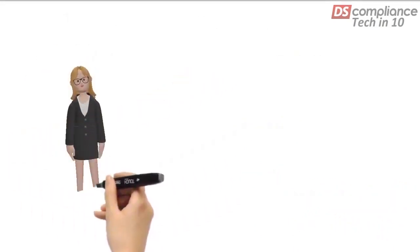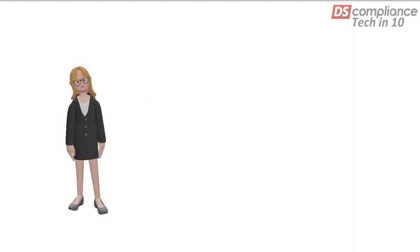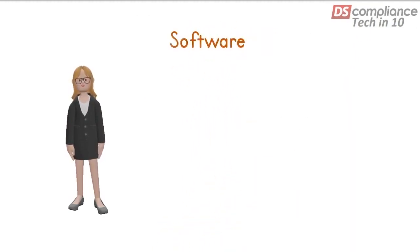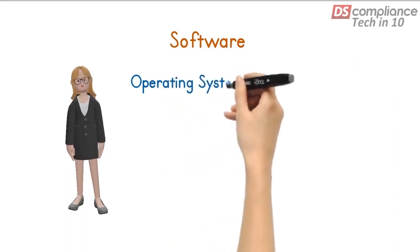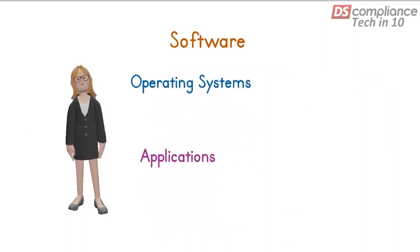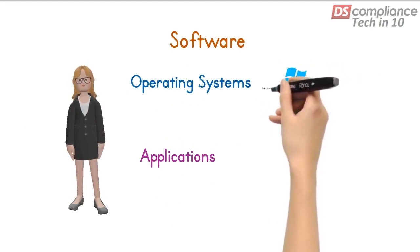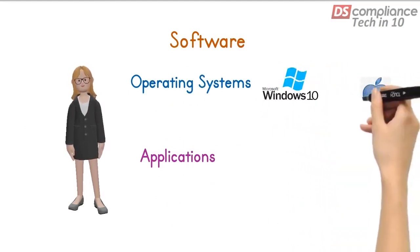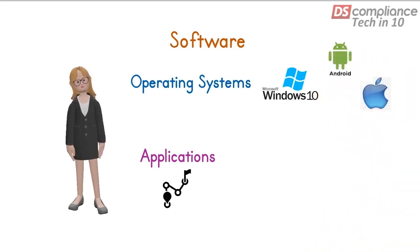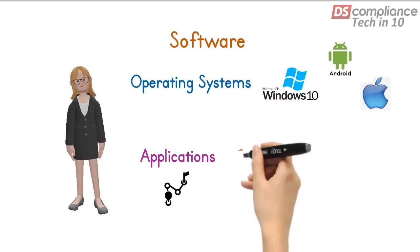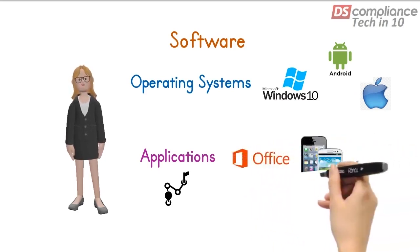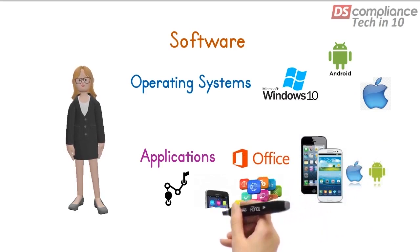So let's now look at the second element of a computer system: software. Software in turn has two elements — operating systems and applications. Operating systems, like Microsoft Windows, Apple and Android, are what effectively drive the computer. Applications, on the other hand, perform specific tasks. Examples are Microsoft Office for Windows, and many, many mobile apps for Apple and Android phones.